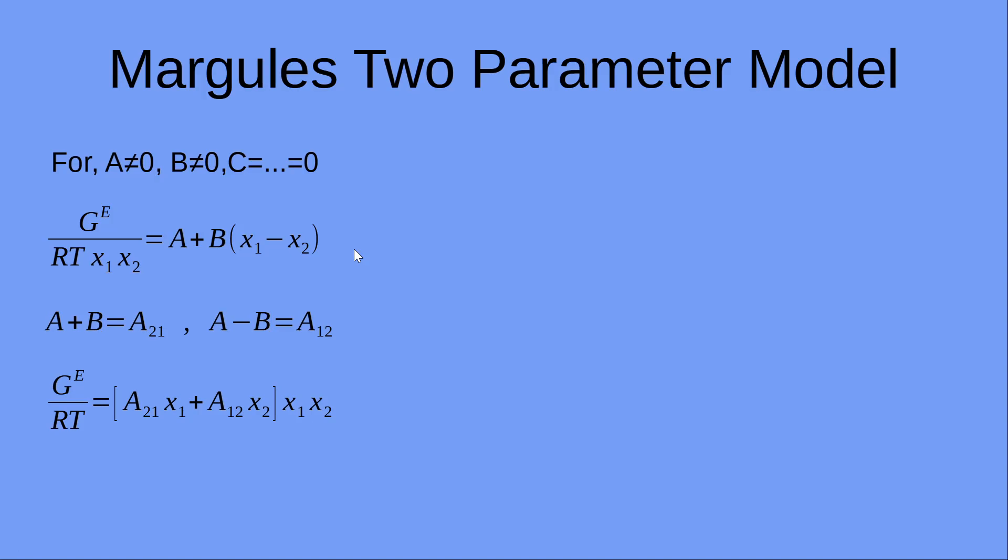What we do is we assume A plus B as A21 and A minus B as A12, and we get the expression as GE/RT equals (A21 X1 plus A12 X2) multiplied by X1 times X2.